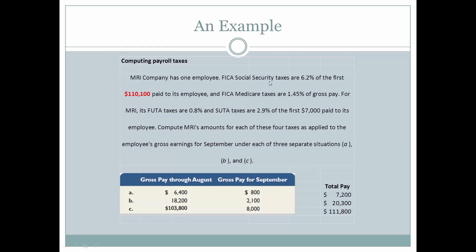MRI Company has one employee. The FICA Social Security taxes are 6.2% of the first $110,100 paid to its employee. There was a typo in the book with reference to this number, but I'm giving you this example so we can correct this so that your answer in homework will be correct — it should be $110,100. FICA Medicare taxes are 1.45% of gross pay. For MRI, FUTA taxes are 0.8% and SUTA taxes are 2.9% of the first $7,000 paid to its employees. We'll compute the amounts due for each of these four taxes as applied to the employee's gross earnings for September under each one of these three separate situations.